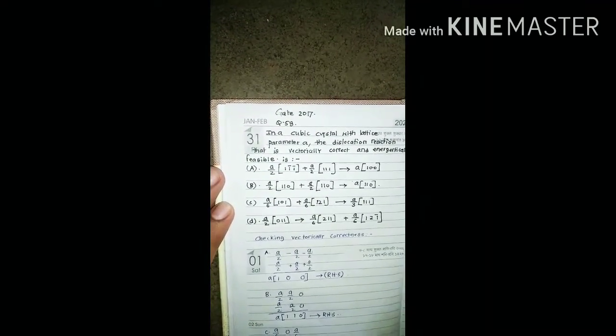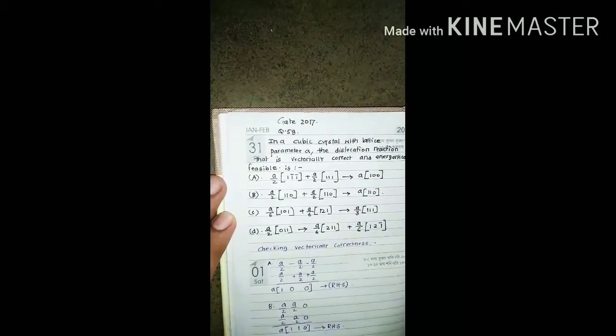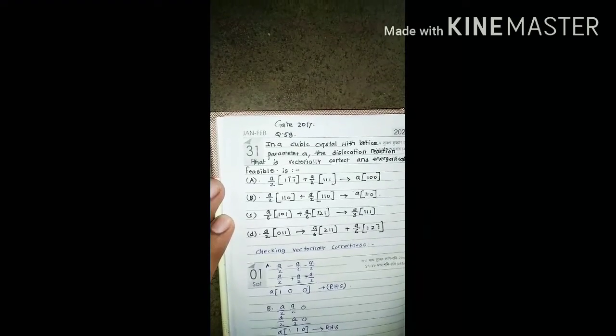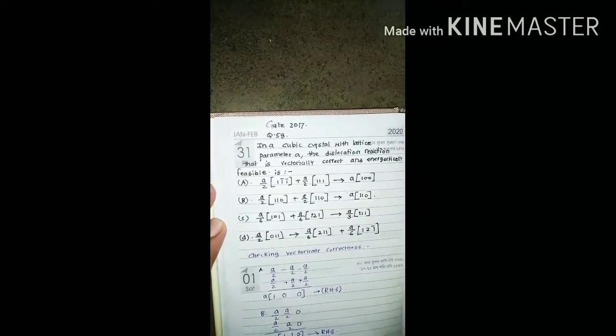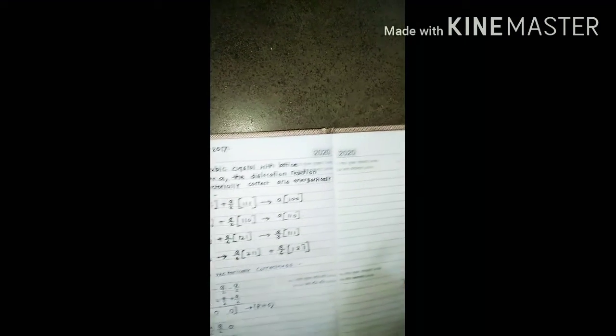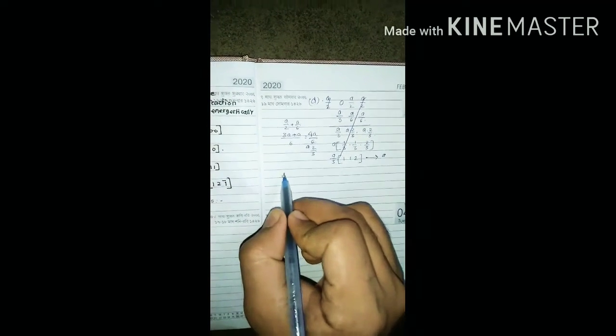Now coming to option D, you can see in option D it is a by 2, 0, 1, 1, and it is becoming a dislocation of a by 6, 2, 1, 1 and a by 6, 1, 2, 1. Let's check if it is vectorically correct or not. I am going to calculate for option D again.